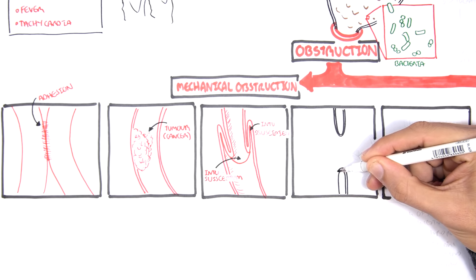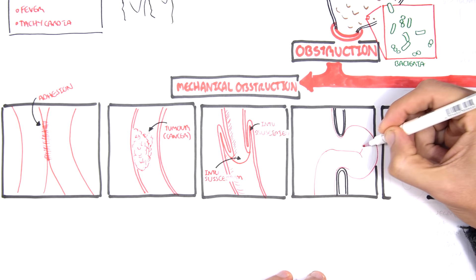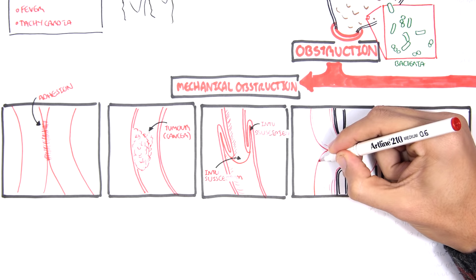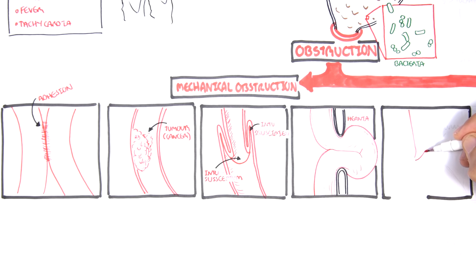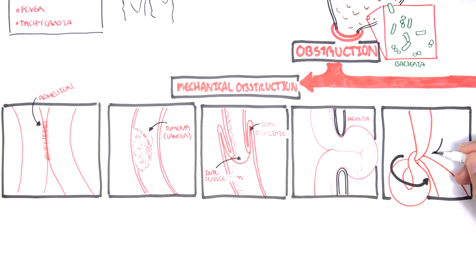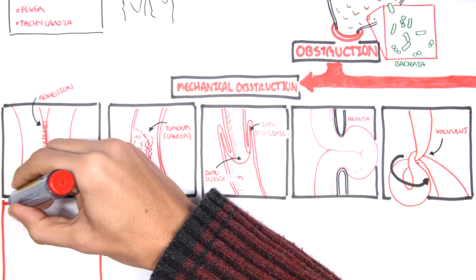Another cause of mechanical obstruction is a hernia, which is essentially a protrusion of part of the intestine through the abdominal wall. Because the abdominal wall can be weak, this can strangulate part of the intestine causing obstruction. Finally, the last type of mechanical obstruction is known as a volvulus, which is essentially where we get twisting of the bowel.